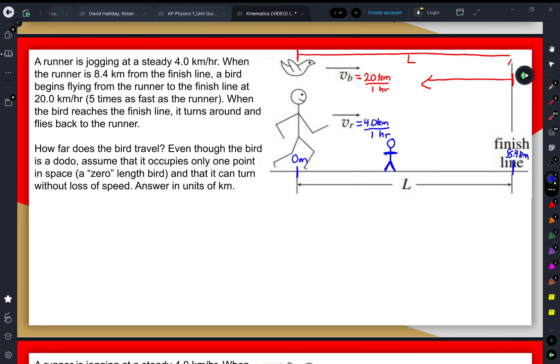That's what we're trying to solve for—is how far overall does the bird travel. So let's say that this is where the runner ends up. Let's call that a position x.